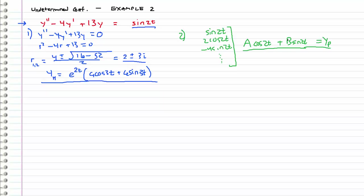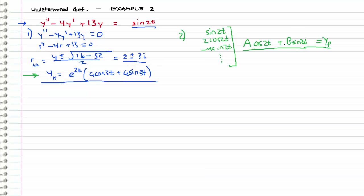We are not done yet — we must make sure the terms in the particular solution form are linearly independent from the terms in the homogeneous solution. A cosine 2t is linearly independent with e to the 4t cosine 3t, and also with e to the 4t sine 3t. Likewise, b sine 2t is linearly independent with both homogeneous terms. So we are okay and can safely assume this form.